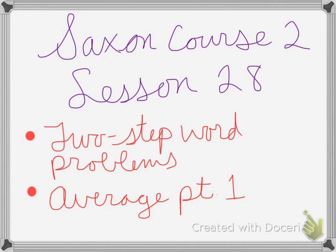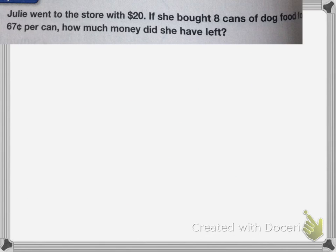Saxon Course 2, Lesson 28, is Two-Step Word Problems and Average, Part 1. Here we have Julie went to the store with $20. If she bought eight cans of dog food for $0.67 per can, how much money did she have left?